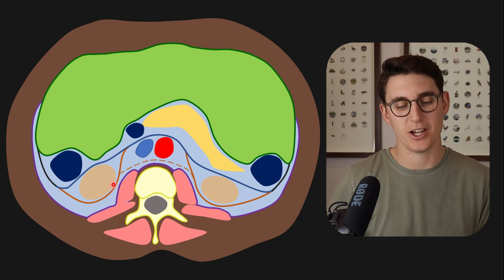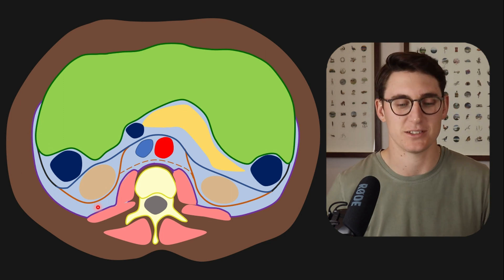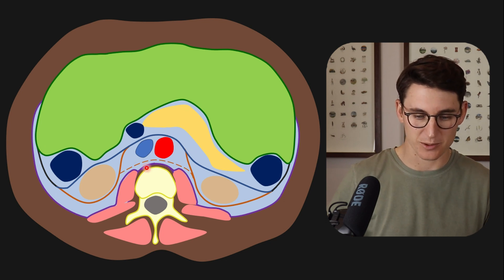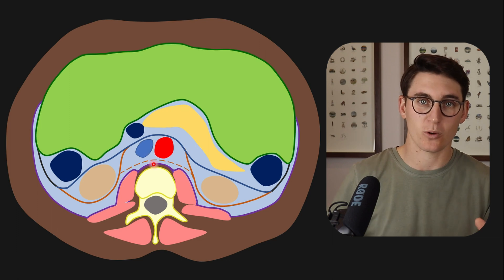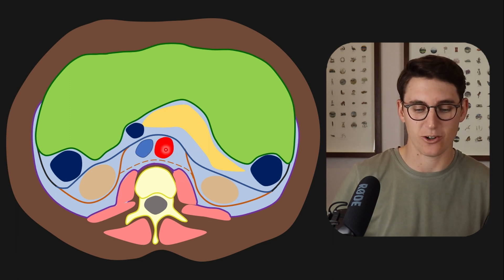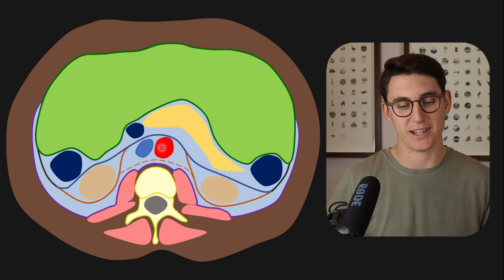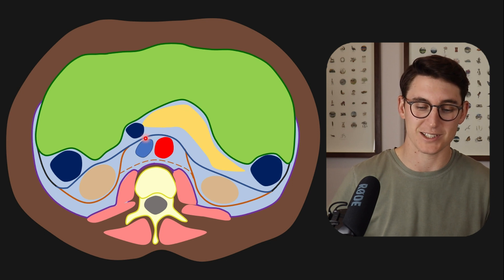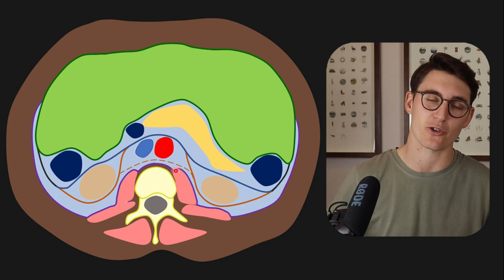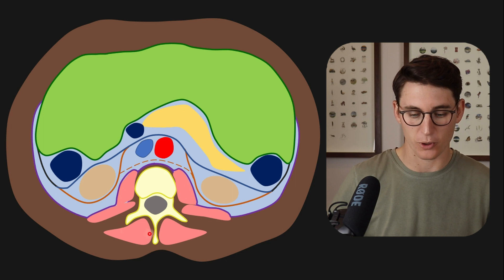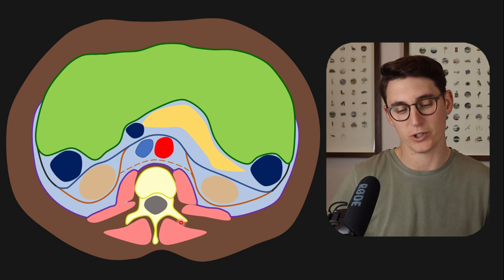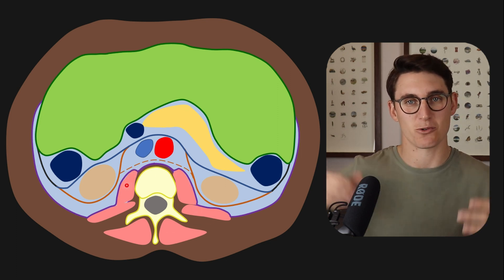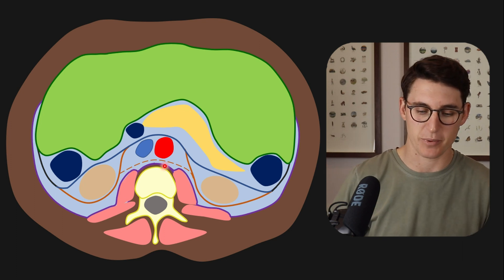So this is our posterior pararenal space — we've made our three spaces. Some people like to divide it slightly further and make a compartment that doesn't have defined fascial borders, which we call the compartment of the greater vessels, containing our aorta and inferior vena cava. That actually has communication with our posterior mediastinum. Some people also call the vertebral body along with our psoas and quadratus lumborum our posterior space, though technically that's not a retroperitoneal space — it's retro to the retroperitoneum, outside of the peritoneum.